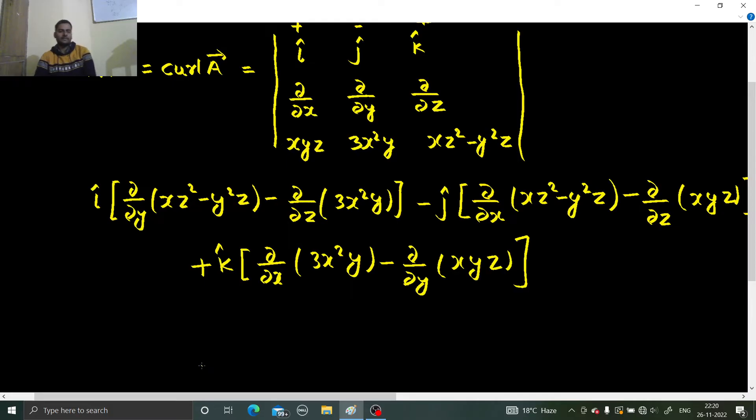I hope you are familiar with partial derivatives. When doing partial derivative with respect to y, x and z are treated as constant. So partial derivative with respect to y of xz² will be 0, and that of y²z: the z and minus sign are constants that can be taken out. Derivative of y² is 2y, so we get minus 2yz. From here, derivative with respect to z has no terms of z, so that gives 0.